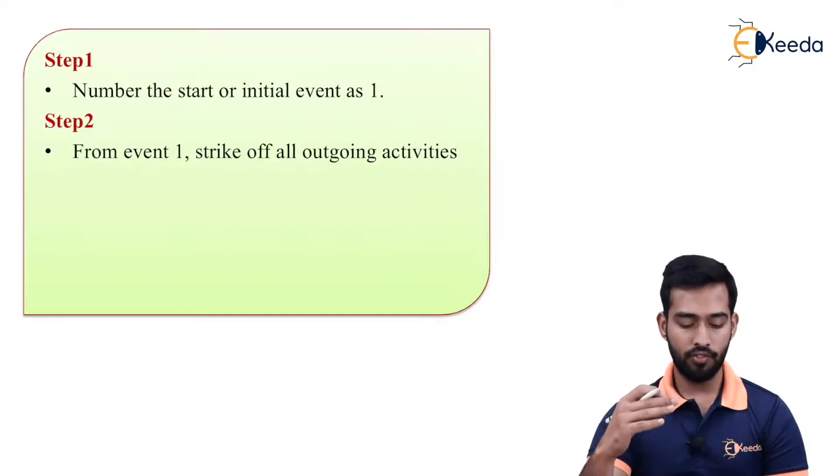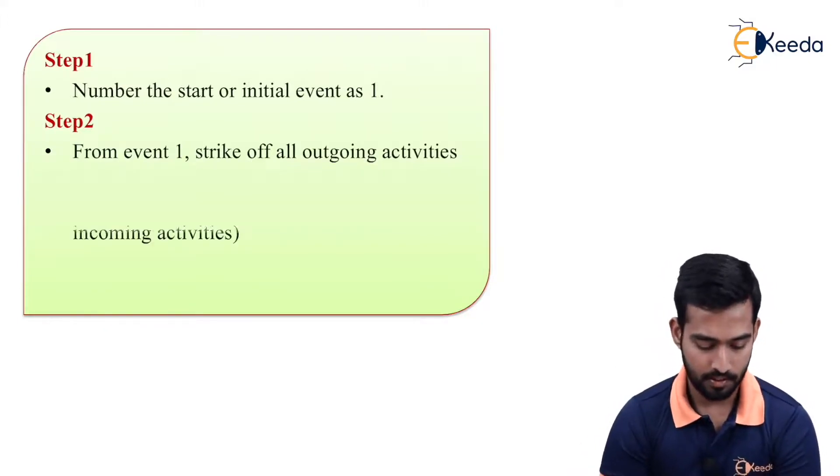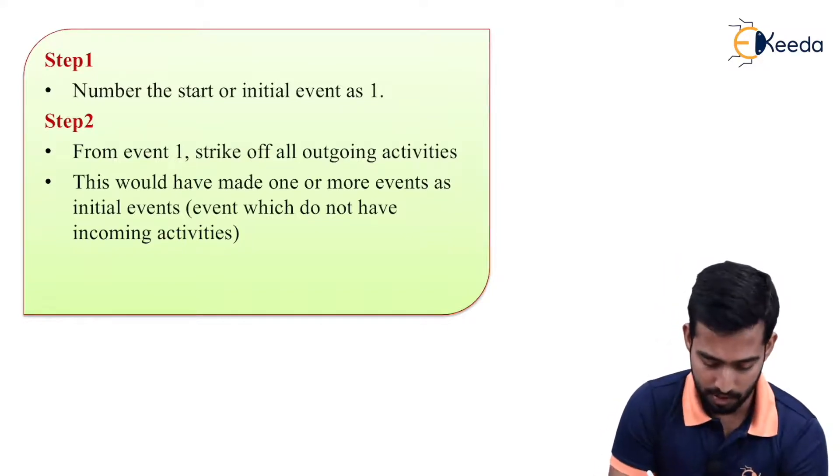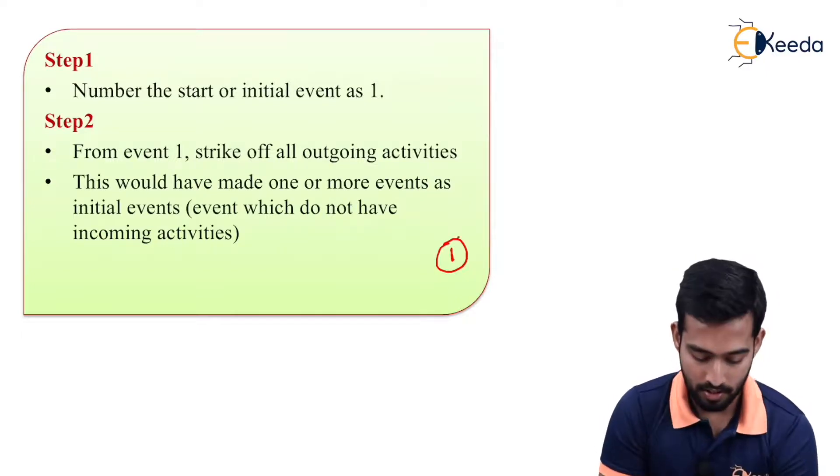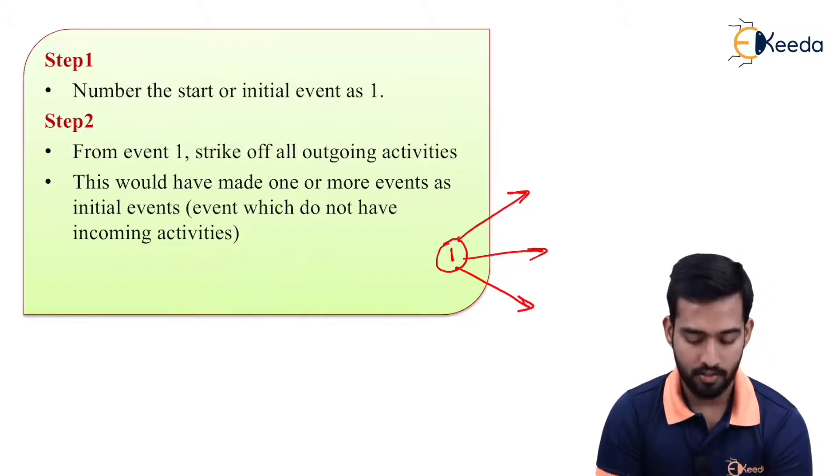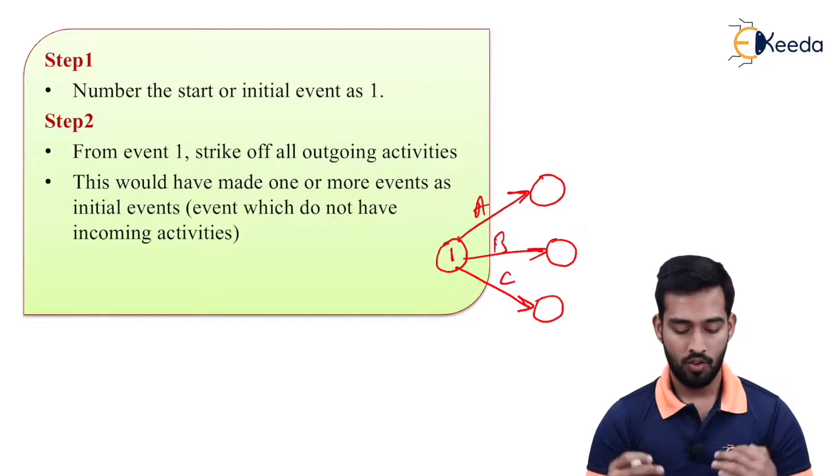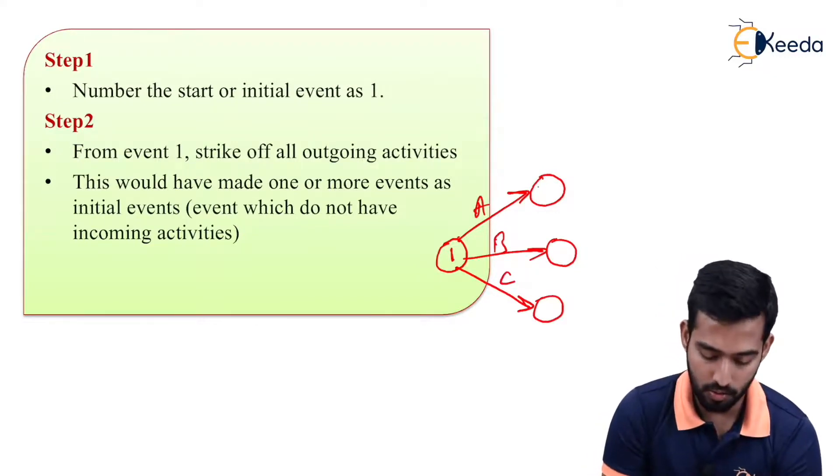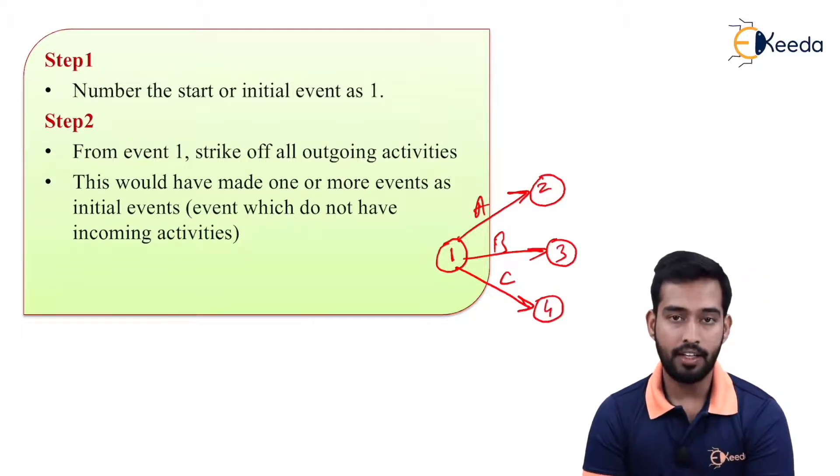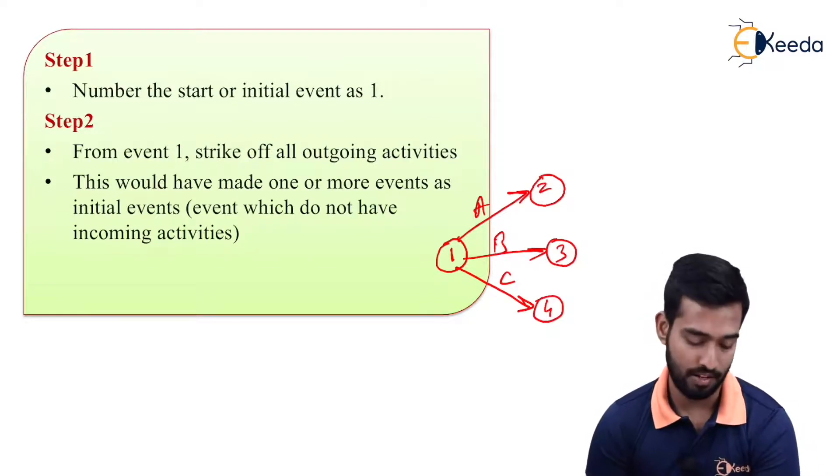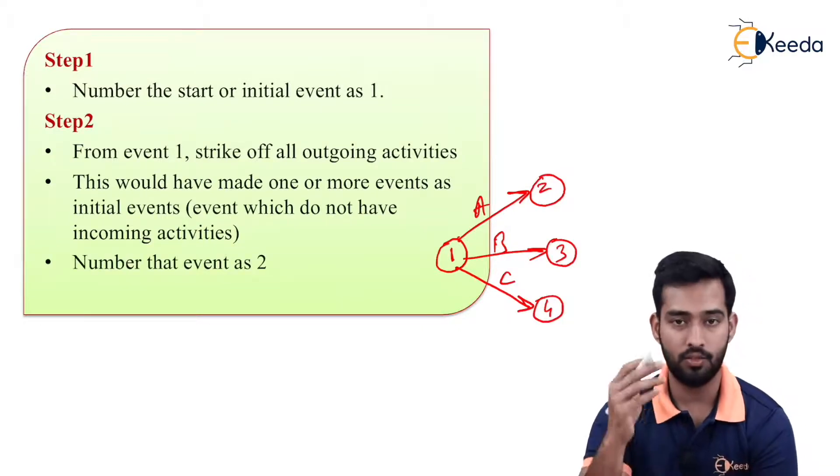Step two: From event one, strike off all outgoing activities. This will have made one or more events as initial events, the events which do not have incoming activities. For example, suppose this is my starting event one, and from starting, we are going for outgoing activities like activities A, B, C. So we have to give numbering to these activities. We can give two, three, four. Here activity A is event one-two, activity B is one-three, activity C is one-four. Likewise, we have to give the numbers.